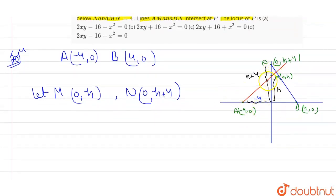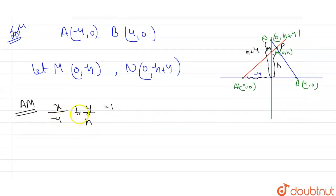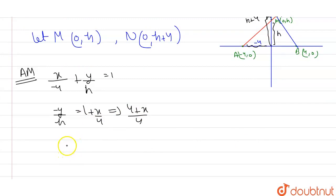So basically what we have to find is the locus of P. I'll first find the intercept of line AM. Intercept of AM will come out as X/(-4) + Y/h = 1. From this equation, I can write -Y/h = 1 + X/4 = (4+X)/4. So the value of H comes out as H = 4Y/(4+X).